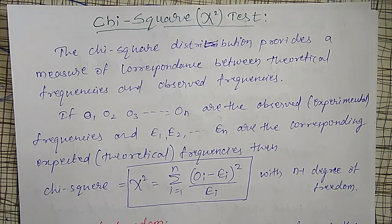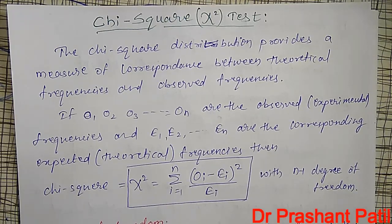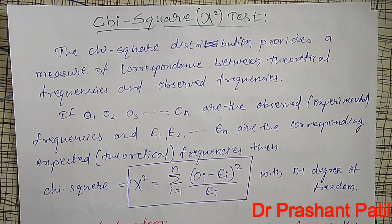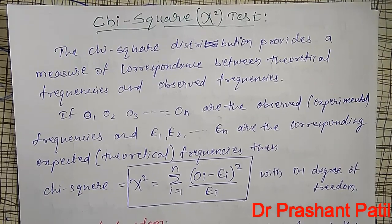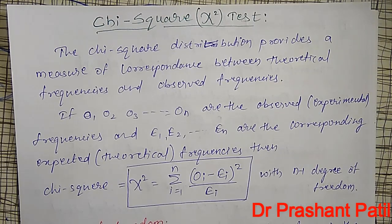Welcome friends. In this video, I am going to discuss about the chi-square test. This chi-square test is also for small samples. Small samples means the size of the sample n is less than 30 — such samples are known as small samples. For such samples, we are doing the chi-square test. In the previous videos, I discussed the student t-distribution for small samples; here I am discussing the chi-square test.